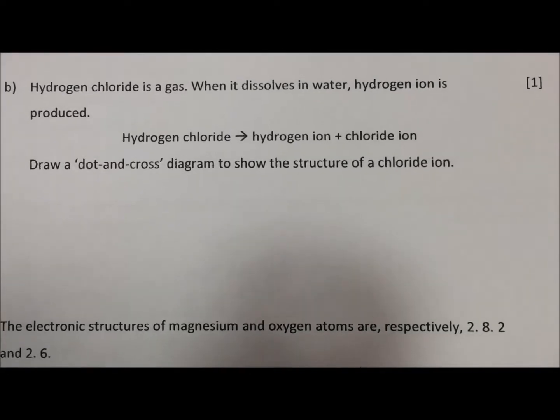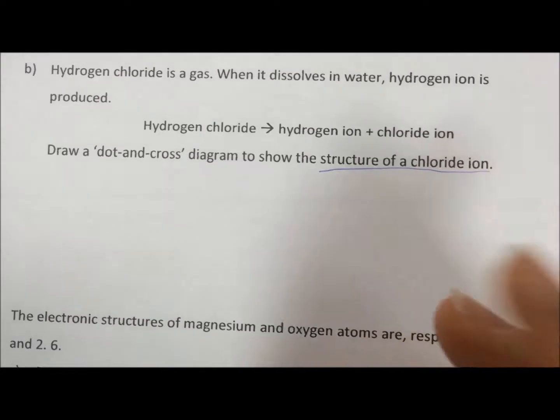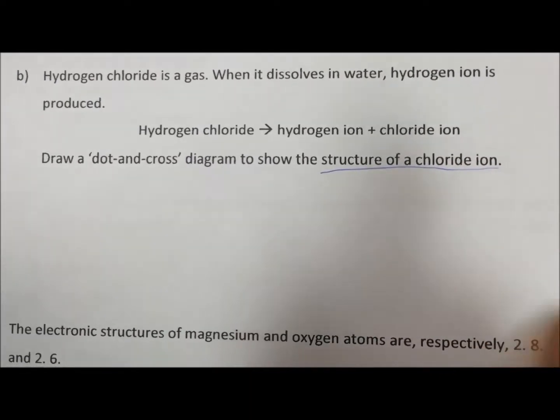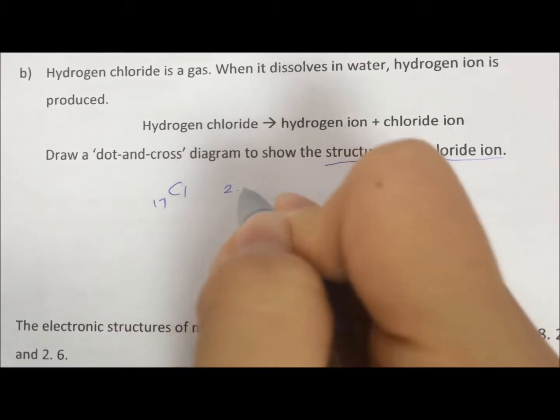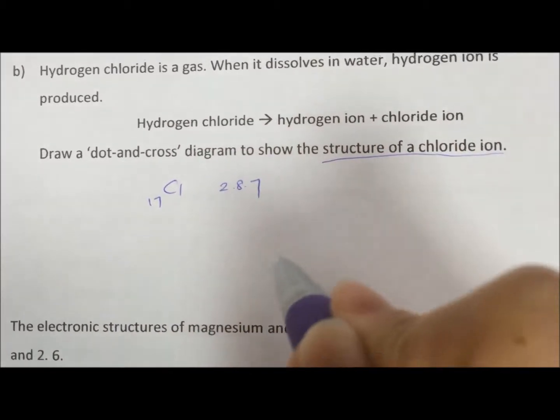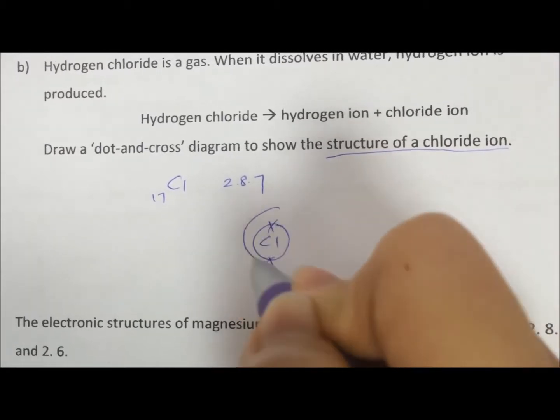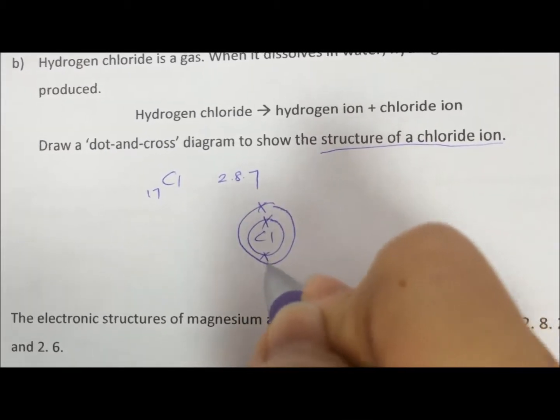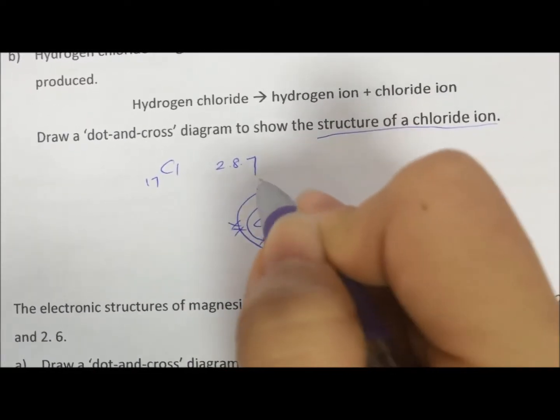Okay, for part B, it says show the structure of a chloride ion. So now they only want the chloride ion. So you can look at the periodic table. They never say show the valence shell only. So you must draw all the electrons. So we draw 2.8.7. Here we are using crosses. Top, bottom, left, right.